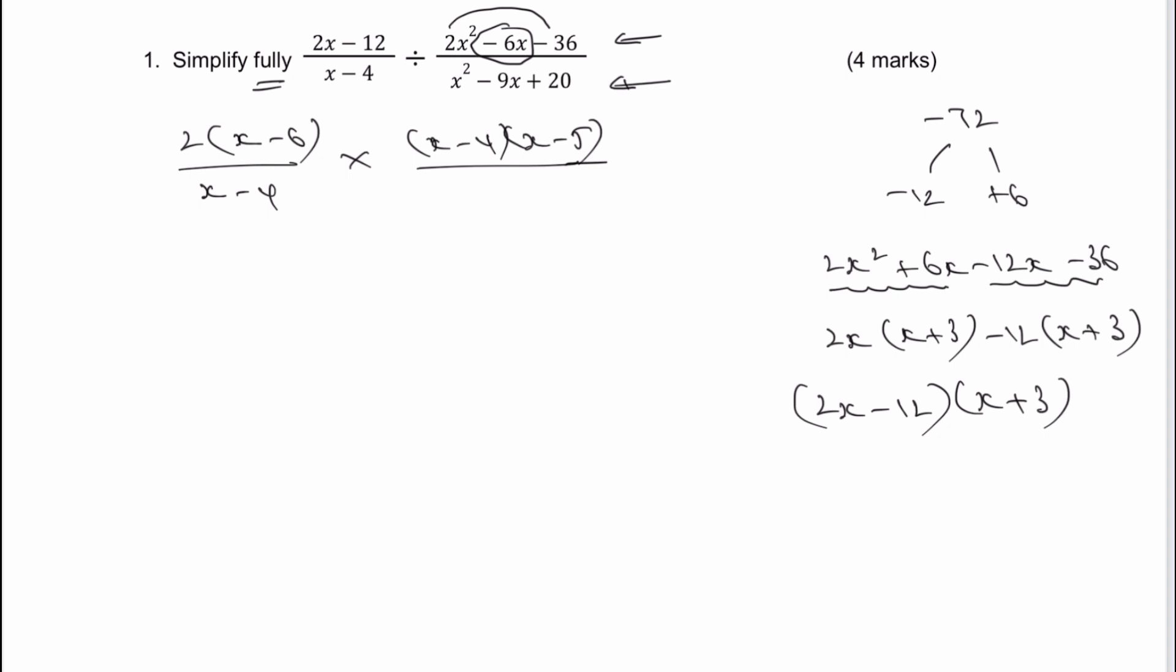Now the other thing I've noticed, and this is just with a little bit of practice, is that 2x minus 12 can be factorised as 2 times x minus 6. And that just makes my life a little bit easier. So if I now write this into the new denominator, I'm going to get 2x minus 6 multiplied by x plus 3.